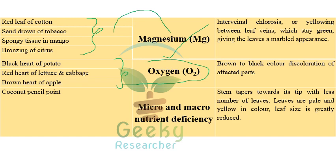Oxygen deficiency causes black heart of potato, red heart of lettuce and cabbage, and brown heart of apple. Black heart of potato (also called hollow heart of potato) is a very important and repeatedly asked question - black heart of potato is caused by oxygen deficiency.